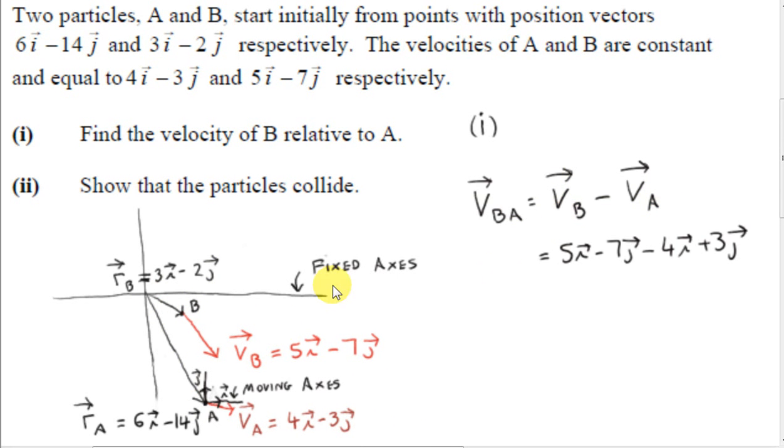VB is the velocity of B relative to the fixed axes or the absolute velocity of B. That's 5i-7j. And subtract VA, which is the absolute velocity of A or the velocity of A relative to the fixed axes. Working this out, we get i-4j.